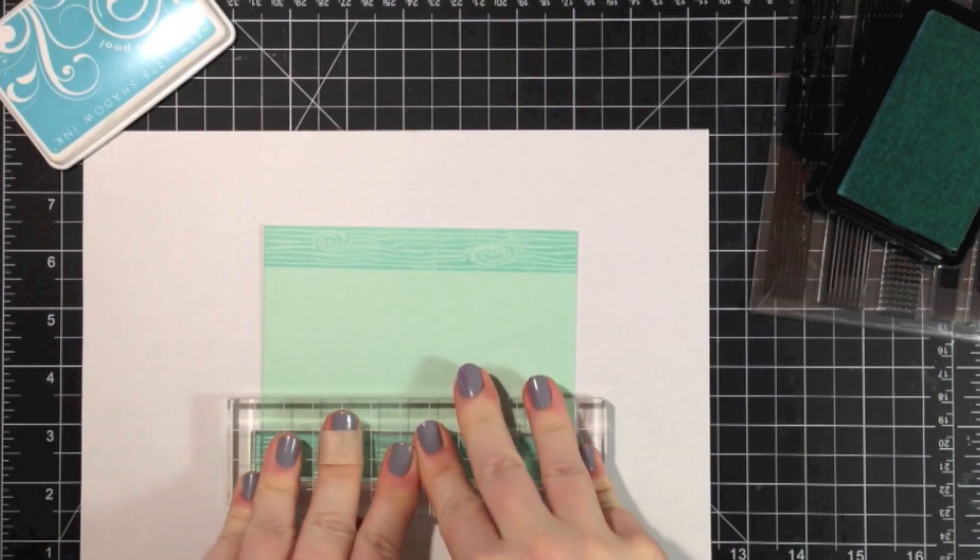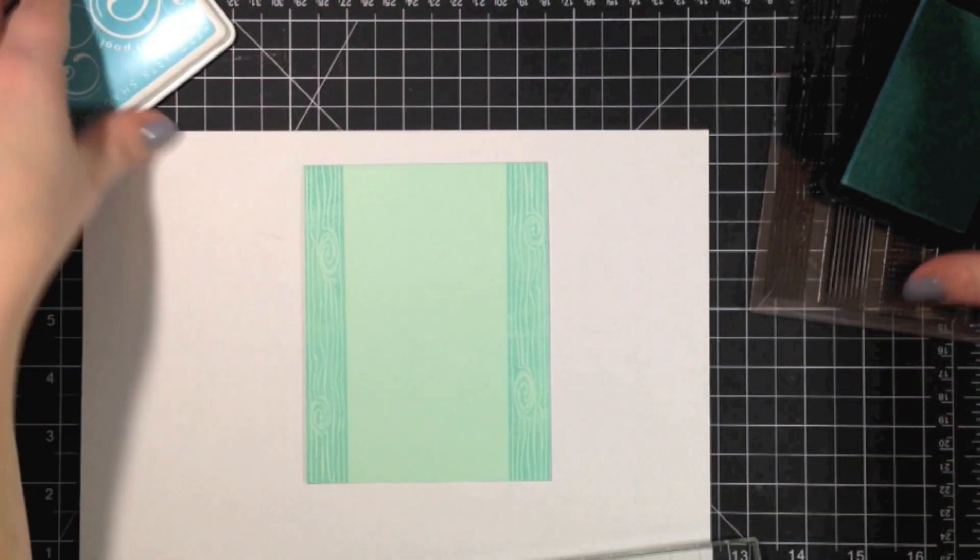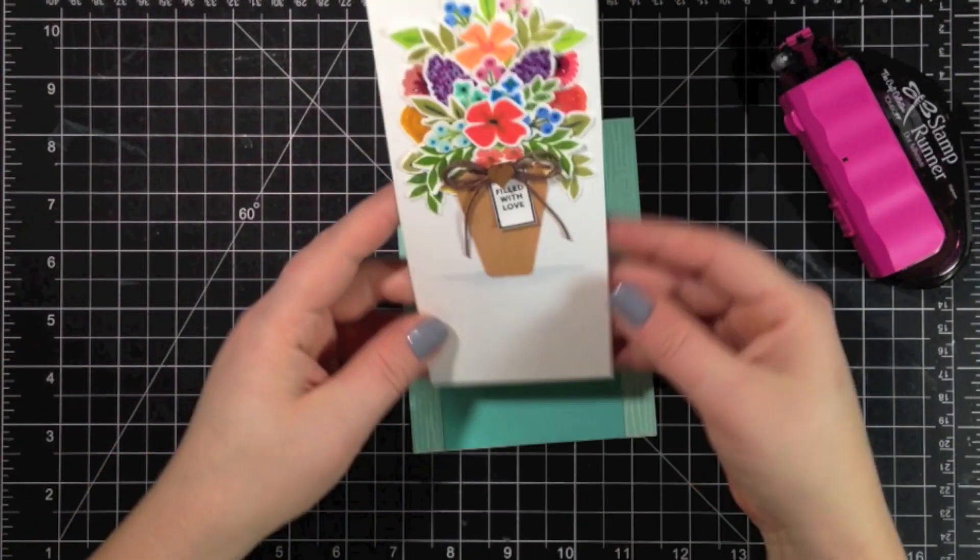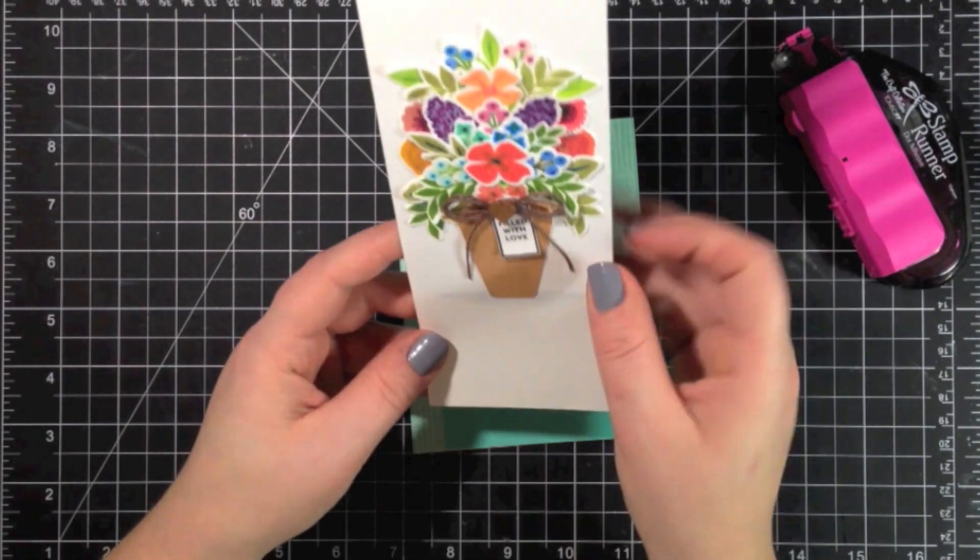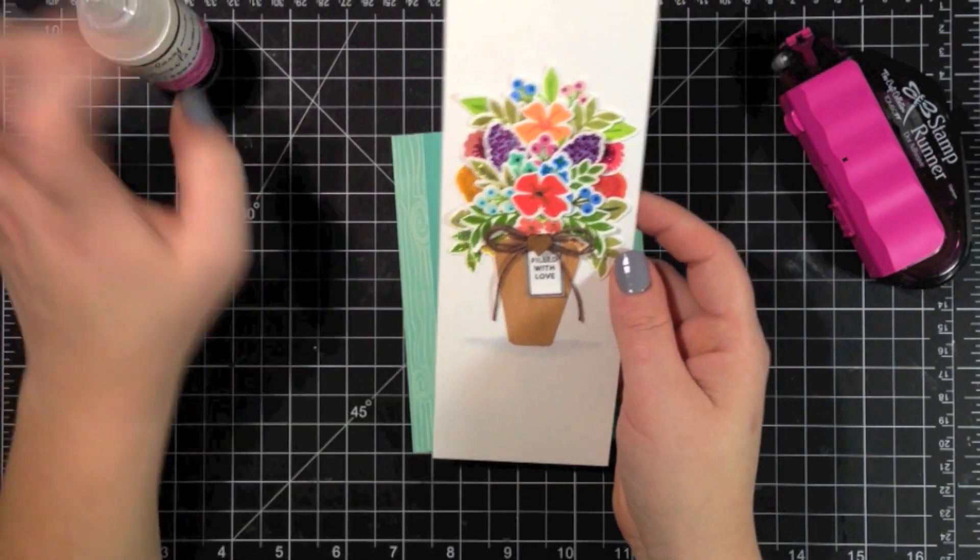Once I did that, I went ahead and did the background piece. What I did here is I used the Newton Tangled on the Strip 2 stamps to put a little bit of wood grain pattern there. Then I added the strip of the darker pool color so that I could layer my floral image on top.